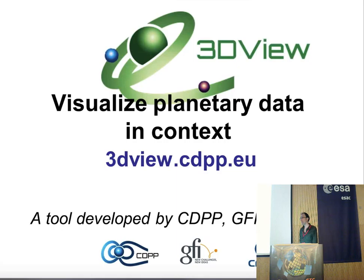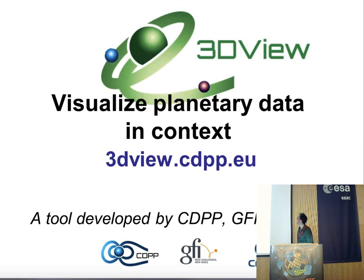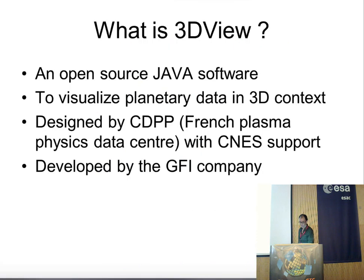3DVue is a tool developed by CDPP, GFI, which is a French company, and CNES, a French spatial agency. It is an open source Java software. The address is 3dvue.cdpp.eu — you can try it now if you want. We will also provide a demo tomorrow in track B.